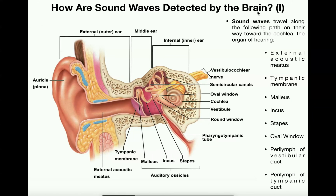We're going to follow the path of sound waves starting from the external environment and see where they go. Once sound waves enter the ear they move toward the organ of hearing, which is called the cochlea. The sound waves start in the external environment and travel into your ear hole. This canal is called the external acoustic meatus, sometimes called the external auditory canal.